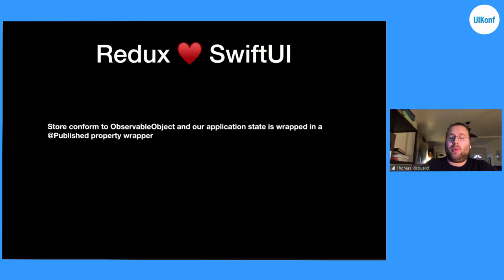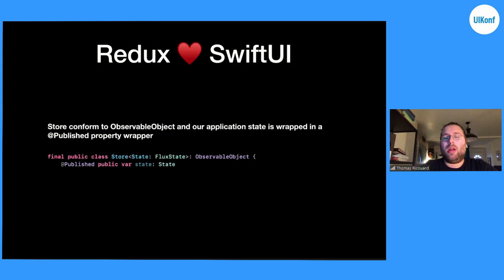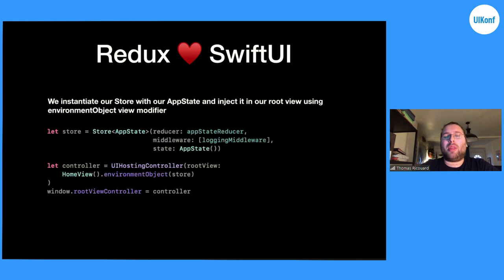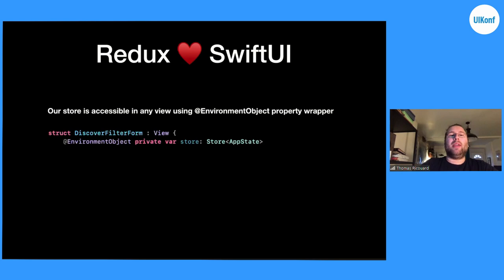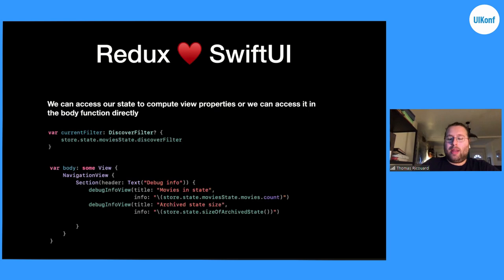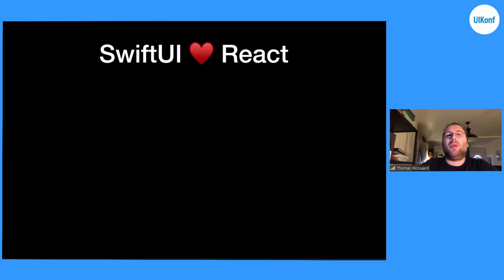So how will we build a Redux store using the SwiftUI dataflow we saw? Our store will conform to ObservableObject, and inside it will have one Published property containing all application state. We create a new instance in the AppDelegate for our store, and then inject the store using the environmentObject view modifier inside our home or root view, so it will be available in any subsequent subview. In any subview, we can retrieve an instance of this store using the EnvironmentObject property wrapper, and extract properties either as computed properties using store.state or access them directly in the body. Because the store's state is Published, any time a change happens, we get the most updated values.